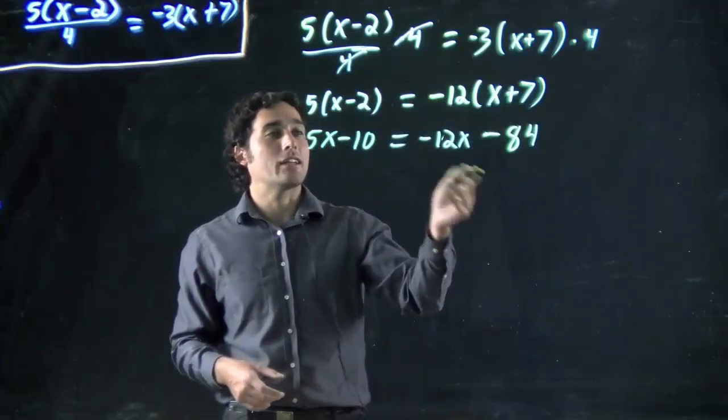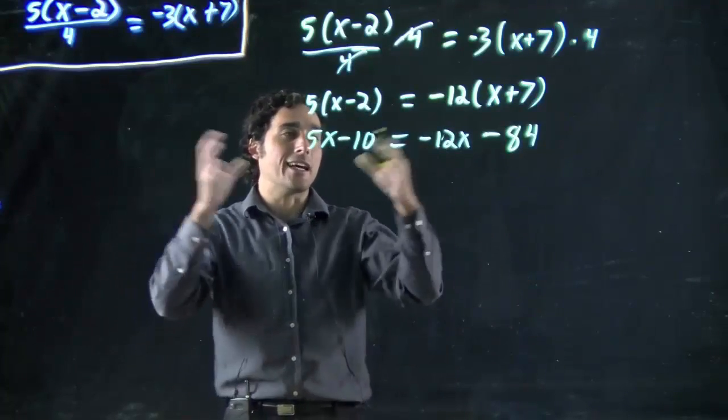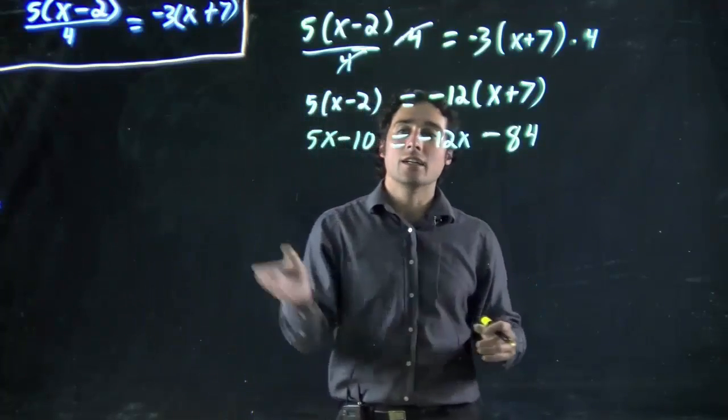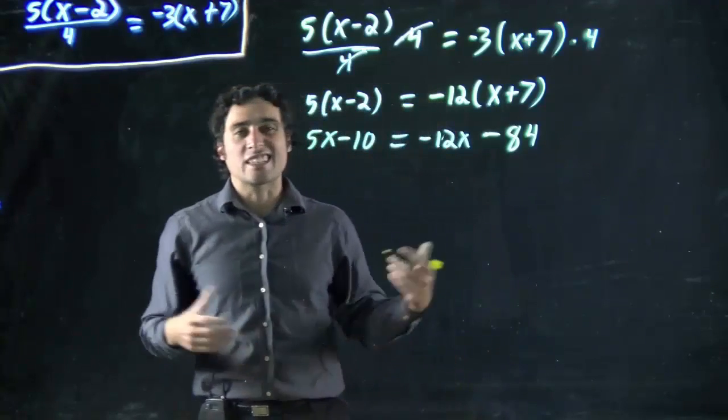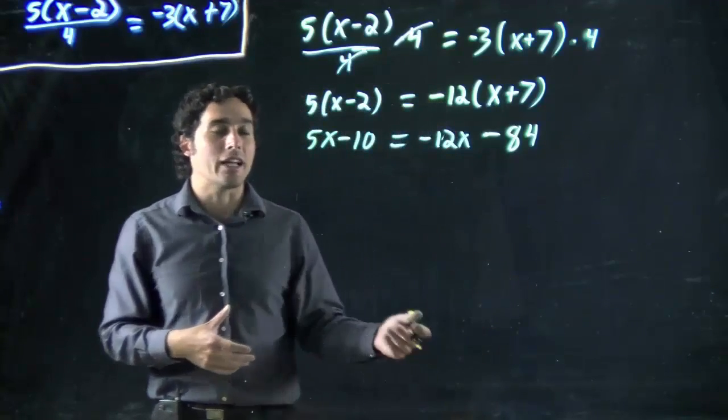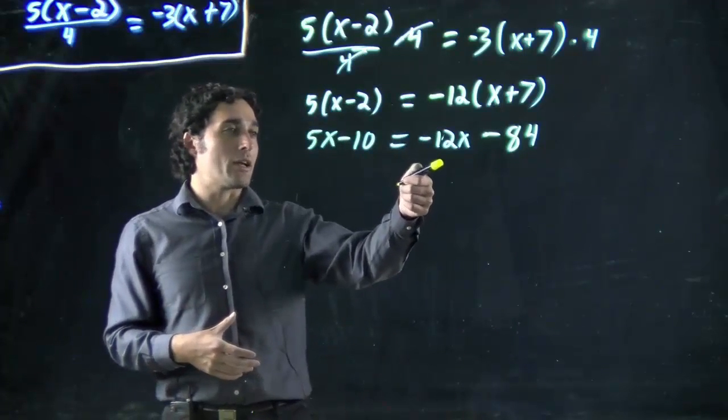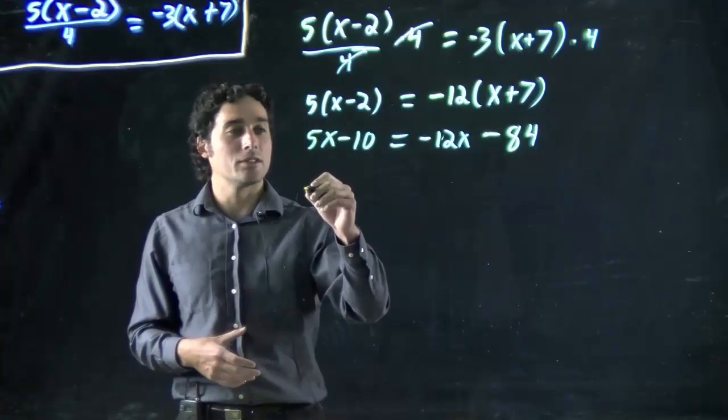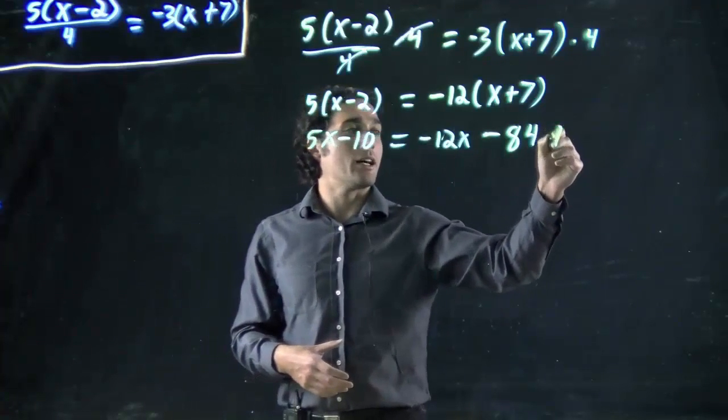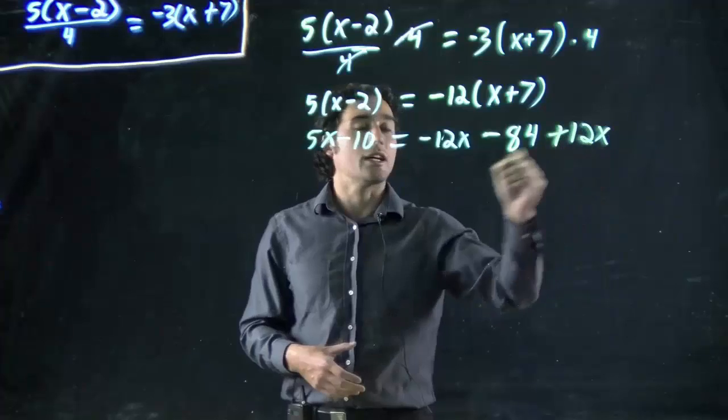Well, now we have to get like terms together. We've got to get all the variables, all the x's together, all the numbers together. It doesn't matter what side. I'm going to bring the variables to the left. That's kind of the convention. A lot of times people like it on the left. In this case, I know when I bring it over, it's going to become positive anyway. So, I like positive numbers. If I want to get rid of the minus 12, I've got to do plus 12x to both sides.